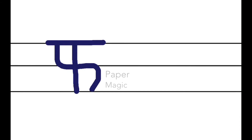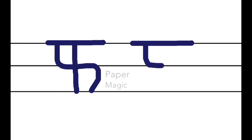So friends, there is one more way in which you can write Hindi alphabet Fuh. In that, draw a sleeping line, and then draw an English letter U shape like that, and then draw a standing line,